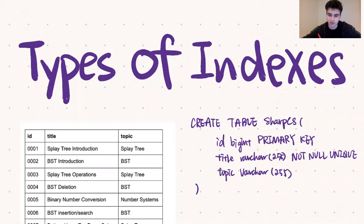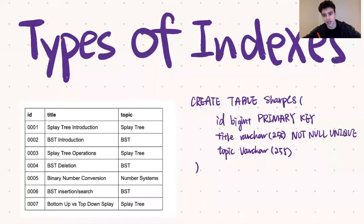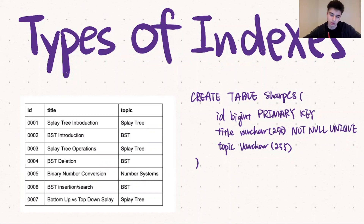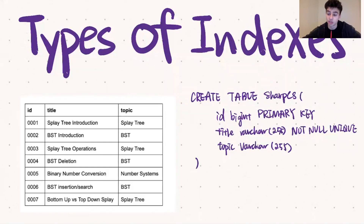For today's algorithm, we're going to be discussing indexes and the different types of indexes that you can put on your relations. Throughout this video we're going to be referencing the table on the bottom left hand side of your screen. The table has three columns: the ID column, which is the primary key; the title attribute, which is not null and unique; and the topic attribute, which is not unique and can be null. The name of this table is sharp cs.